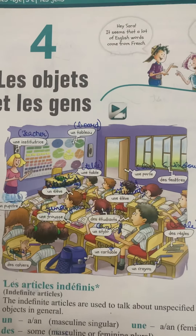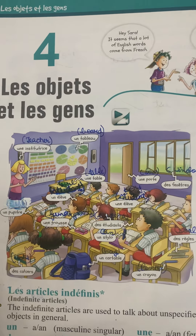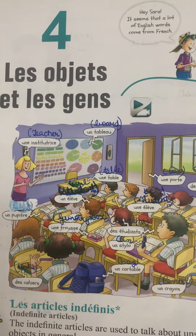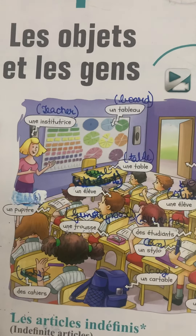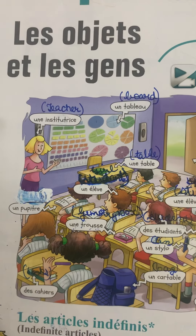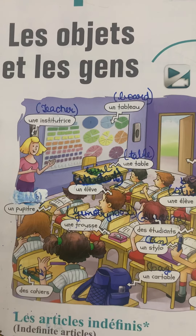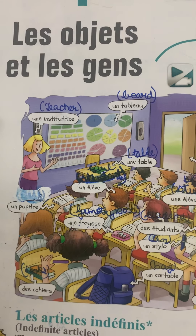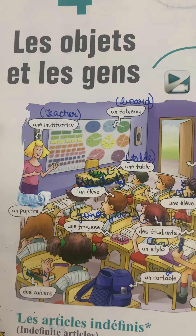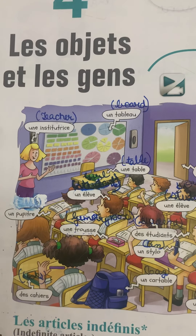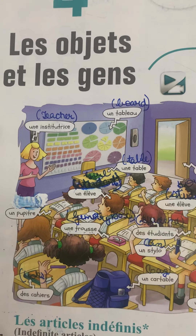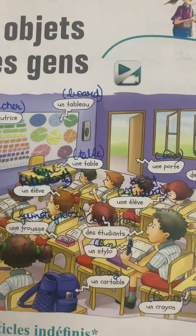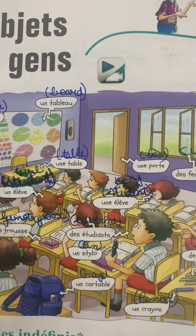This is a scene of a classroom. There are so many things labelled. Now we are going to study these. Une institutrice is a teacher. Un tableau is a board. Un pupitre is a desk. Un élève is a student. Un trousse is a geometry box. Des cahiers are books. Des étudiants are students.